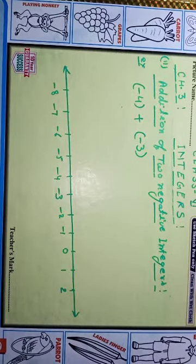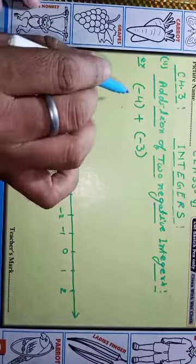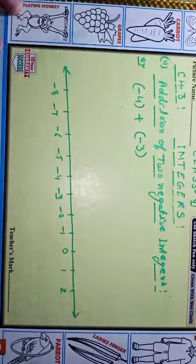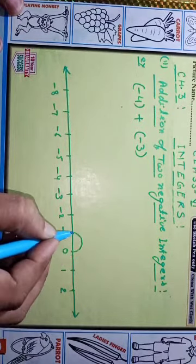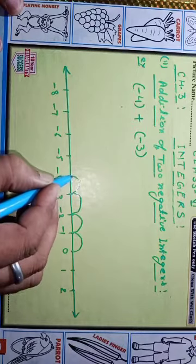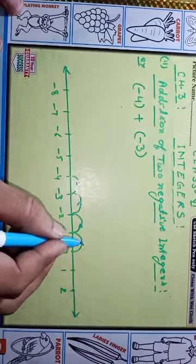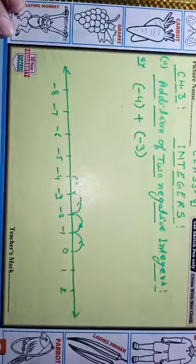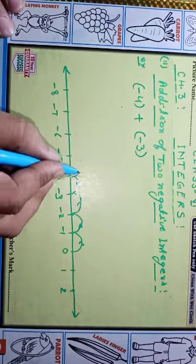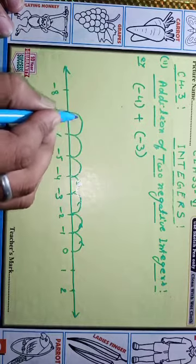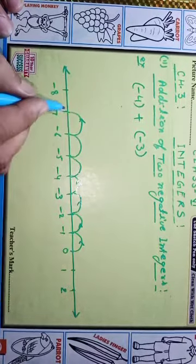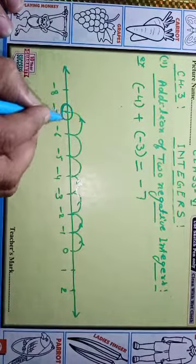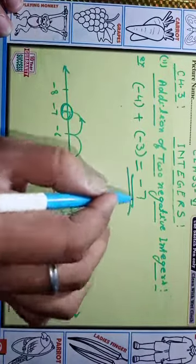Next, addition of two negative integers: minus four plus minus three. Minus four is on the left side from zero — one, two, three, four — this is minus four. Now minus three means we go to the left side three steps: one, two, three. This value becomes from zero to minus seven.